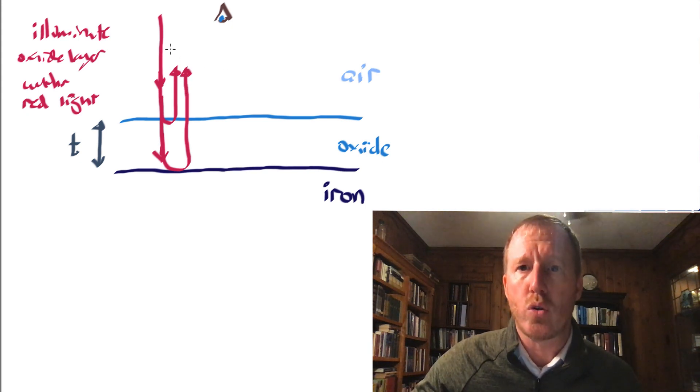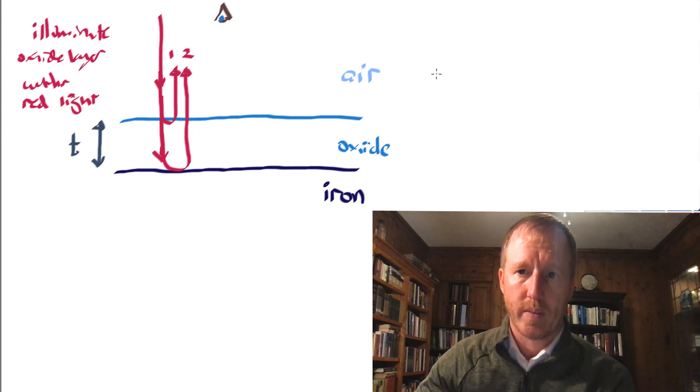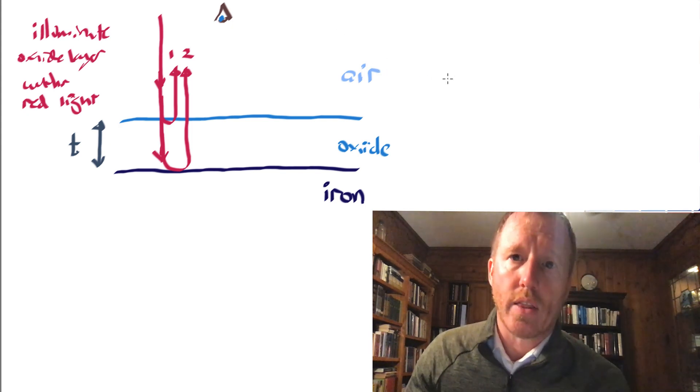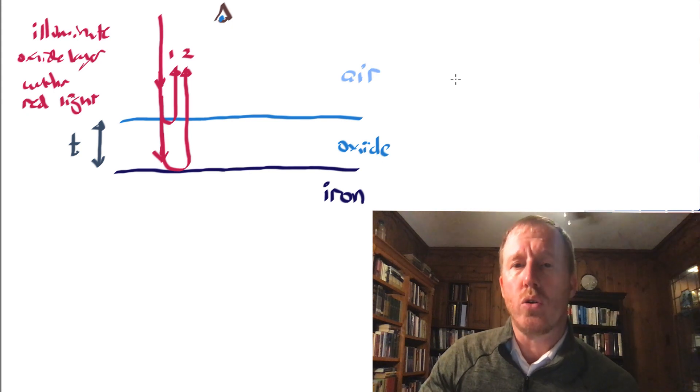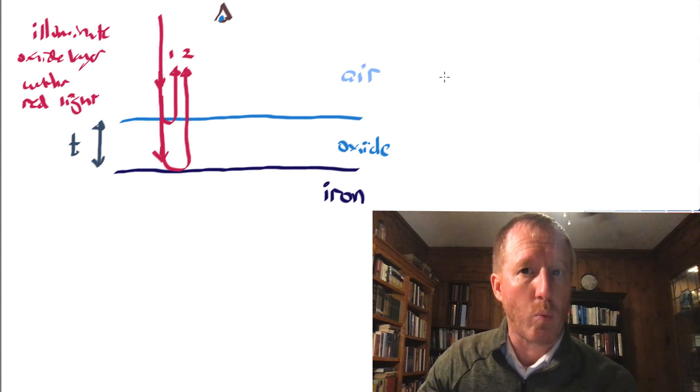So you essentially have two portions of light, portion one and portion two. And the point is that beams one and two are going to be interfering with one another. They obey the superposition principle insofar as they are waves.